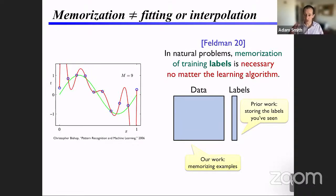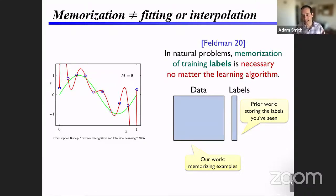People have generally looked at memorization in the form of interpolation — memorizing labels — but we're going to look at a much more extreme form of memorization, more like the GPT-2 example, where the entire description of a training example is memorized in the parameters of the model.